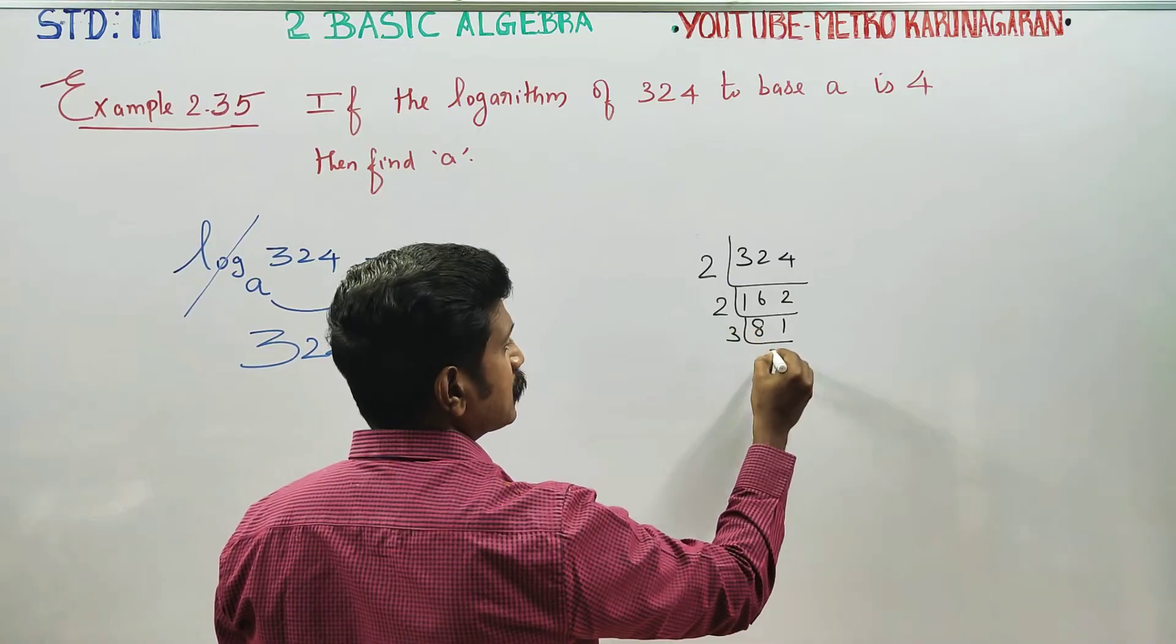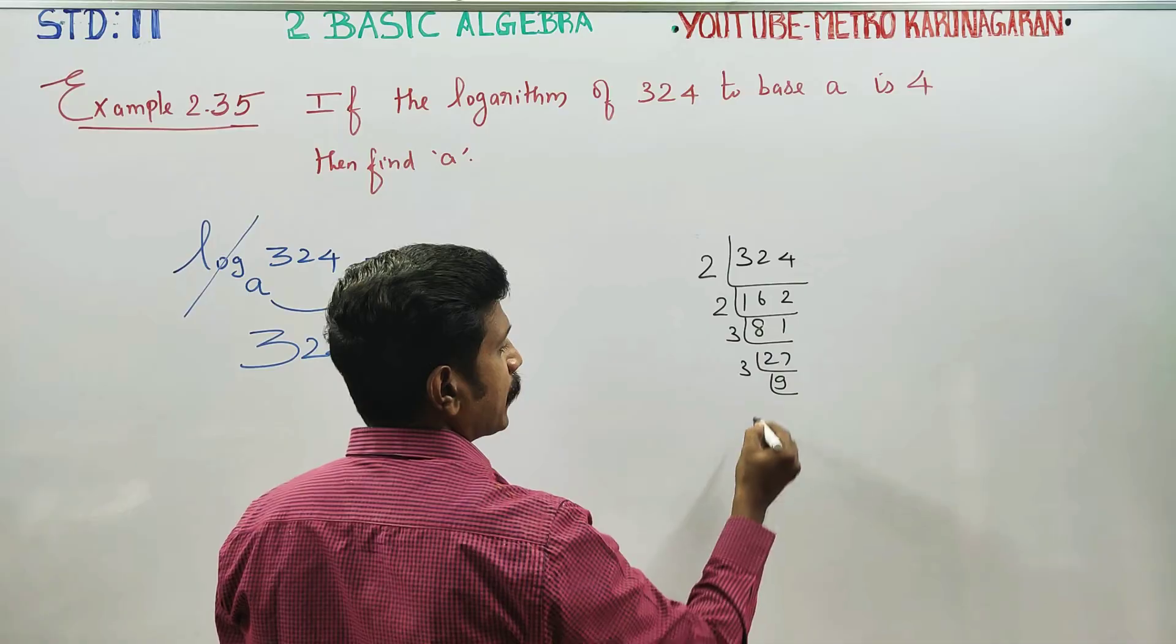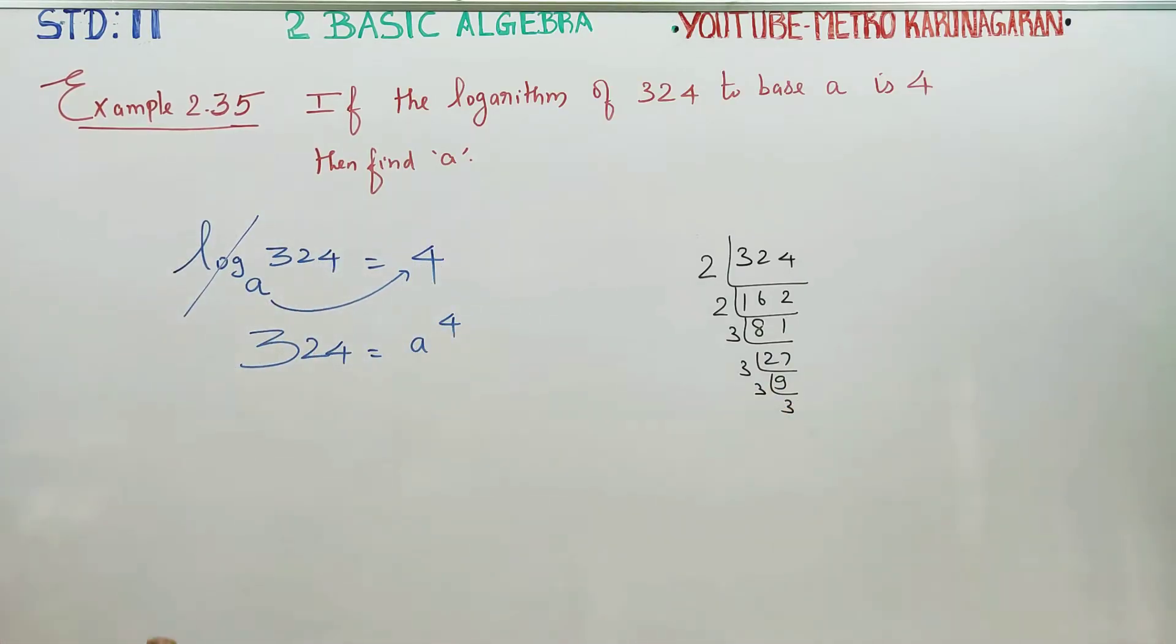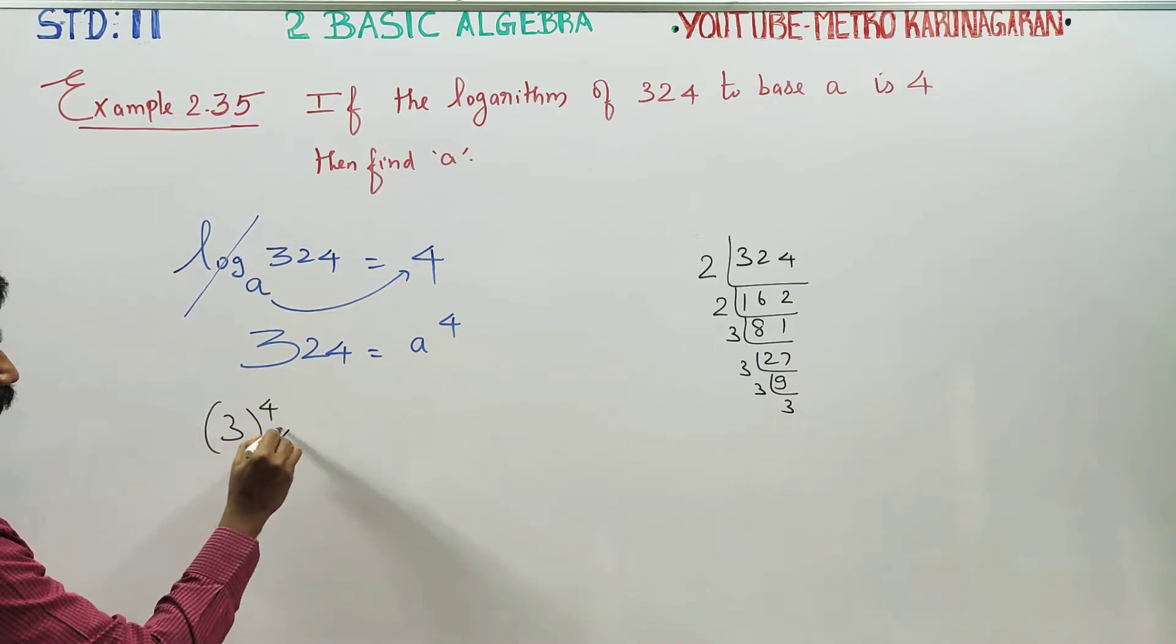Then 3 tables is 27. Again, 3 tables is 9. Again, 3 tables is 3. Then 3 power 4 is 3. I am right. 3 power 4.